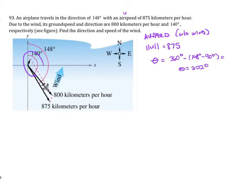Now let's look at ground speed. Ground speed is with the wind. The magnitude of the plane with the wind is 800 kilometers per hour.